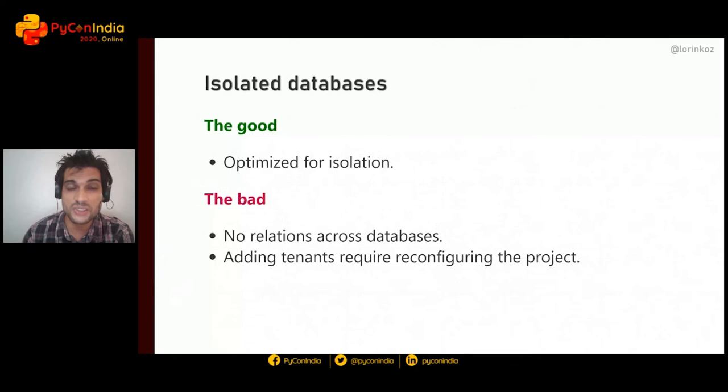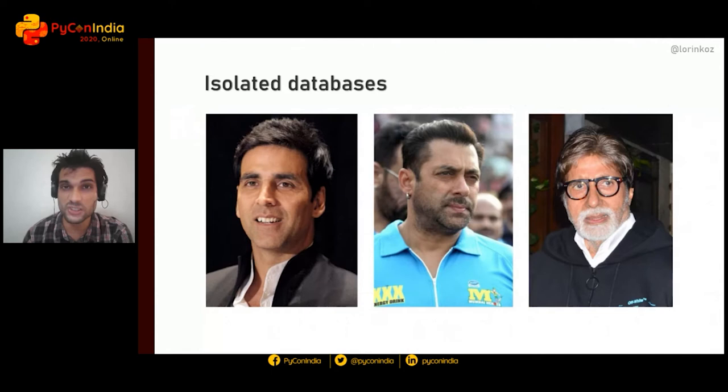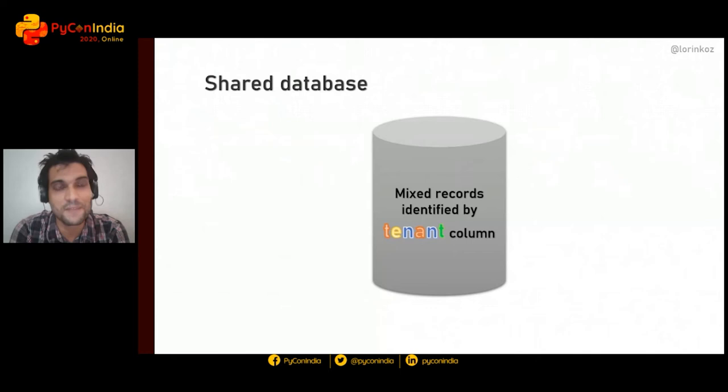The isolated database approach is optimized for isolation since tenants are already separated into different databases. The downside is you cannot have relations across databases — Django imposes this constraint — and adding tenants requires reconfiguring your project settings. Operationally, costs skyrocket the more tenants you have, so unless you plan for a number of tenants in the lower tens, this approach is not generally recommended.